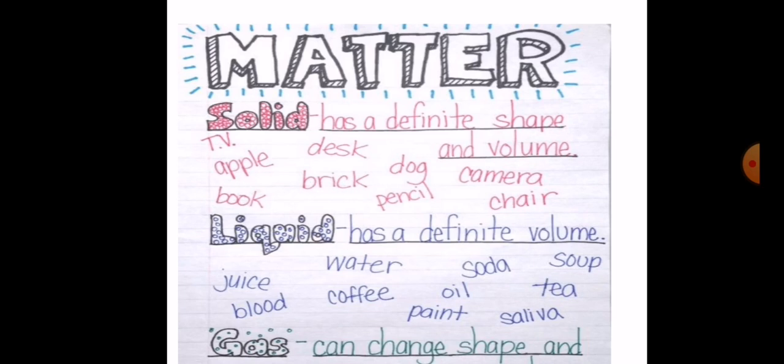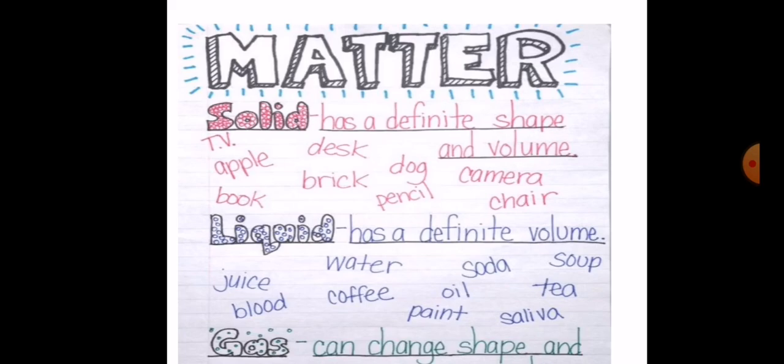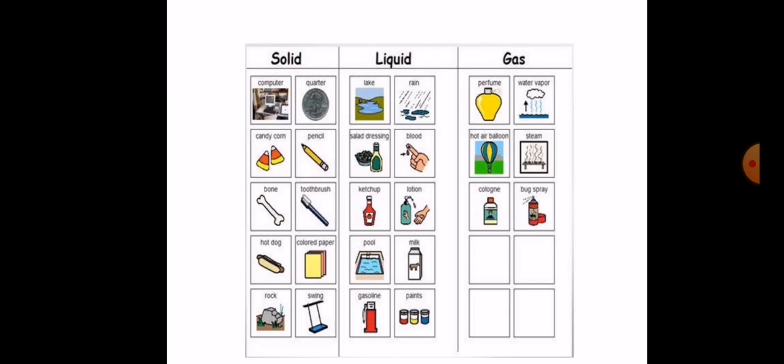The third state is gas. Gas also does not have a fixed shape — it takes the shape of its container. Examples of gas include steam, perfume, and air. Air is actually a mixture of different gases.